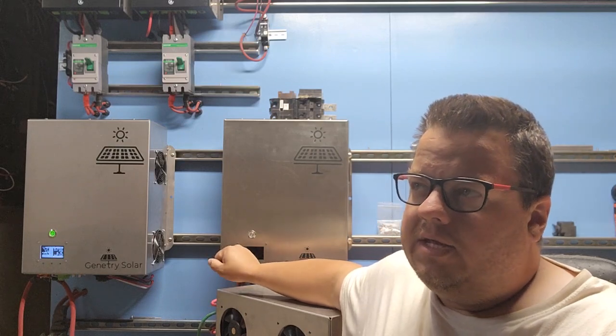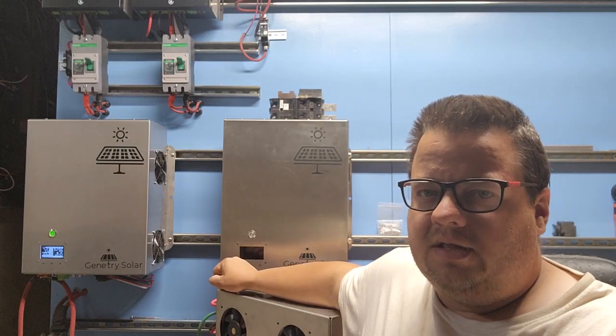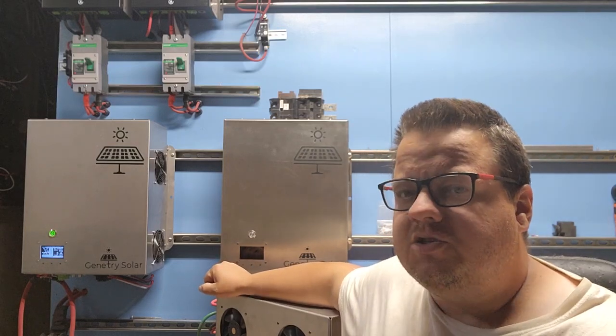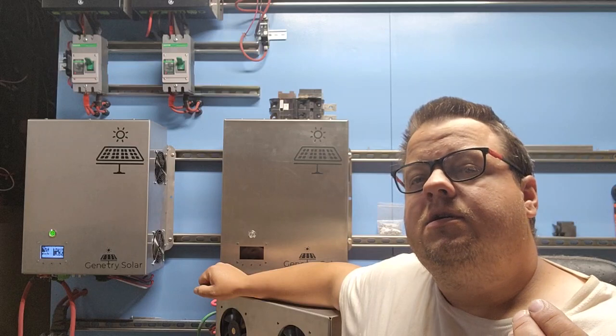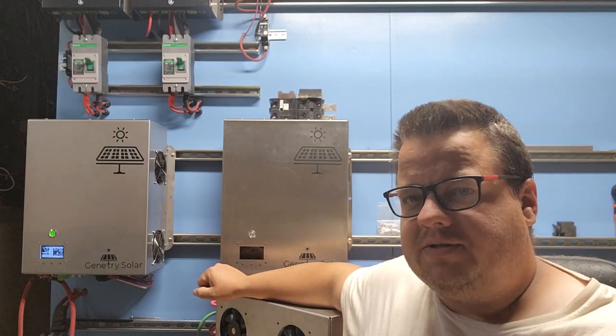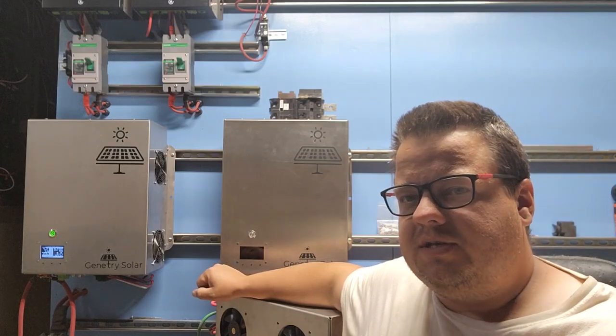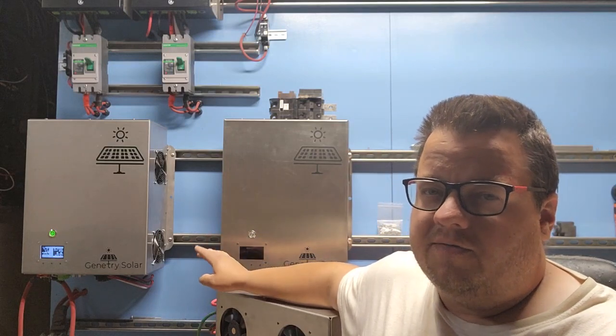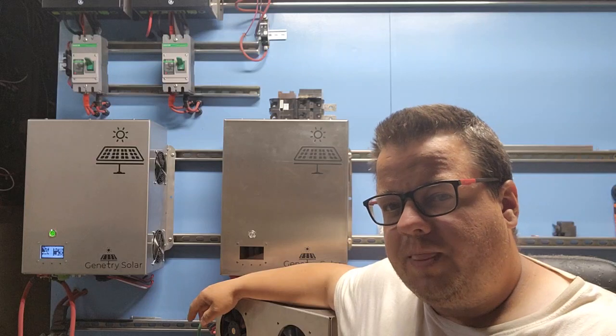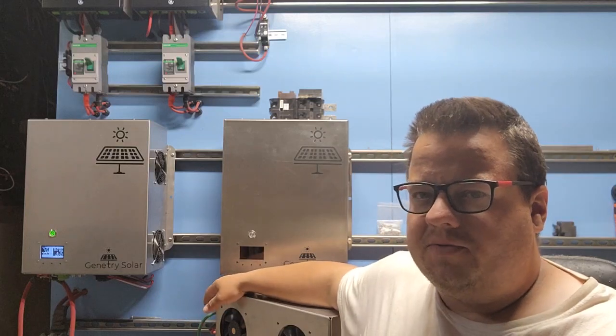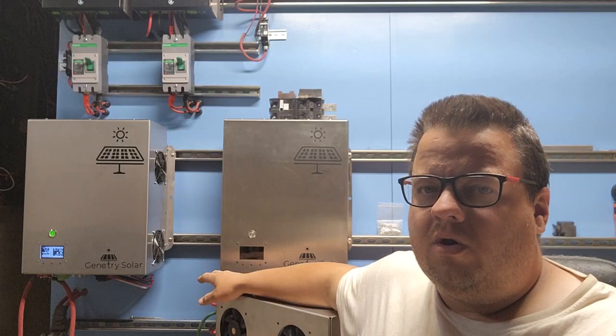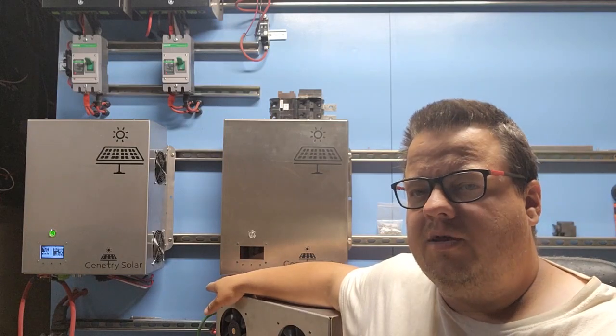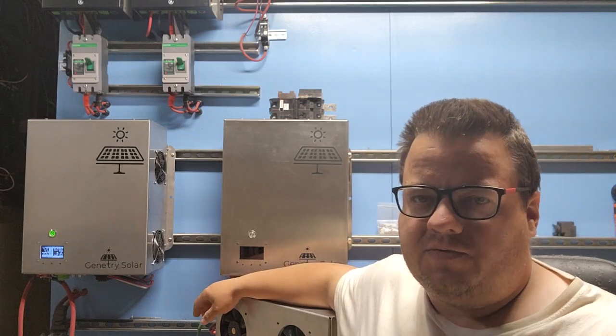The only negative side of the 6 kilowatt inverter is it has a higher resistance transformer. Smaller windings, smaller connectors, there's more resistance there. So the efficiency isn't as good as a 12,000 watt unit. The 12,000 watt unit, we're averaging about 90 to 92%. This is closer to 85%. It's not the end of the world, but just something to be aware of. You're going to be consuming a little bit more energy with the 6 kilowatt just because of the higher resistance transformer.